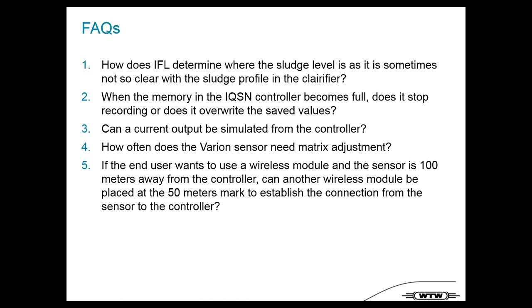Can a current output be simulated from the controller? Yes — the current output can be set to manual mode to simulate, for example, 4 or 20 mA. How often does the Varion sensor need matrix adjustment? This depends on the application; from experience, a matrix adjustment is needed every one to twelve weeks. For wireless connectivity: our wireless technology can handle up to 100 meters distance. For greater distances, an additional wireless connection can be placed in between.